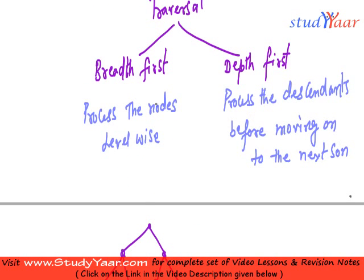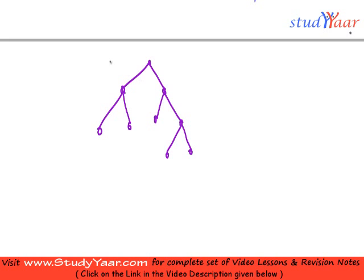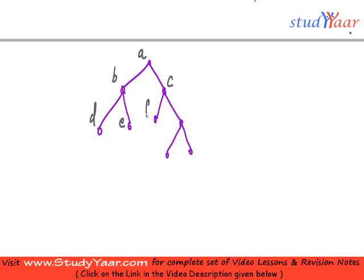I am processing the nodes level-wise. This is my 0th level, my 1st level, and my 2nd level. Let me give names to my nodes: this is A, B, C, D, E, F, G, H, I.